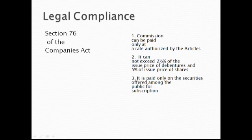Legal compliance under Section 76 of the Companies Act: Commission can be paid only at a rate authorized by the articles of association. The underwriting commission does not exceed 2.5% of the issue price of Depengers and 5% of the issue price of SAS. It is paid only on the securities offered to the public for subscription. In case of firm underwriting, the firm underwriter cannot claim underwriting commission for their own subscription.